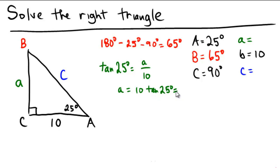So breaking out a calculator here, 10 times the tangent of 25 degrees looks to be around 4.66 to two decimal places. So side A is 4.66.